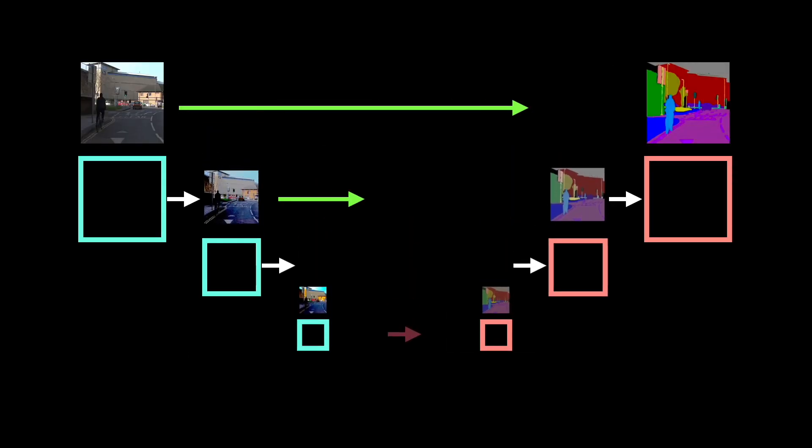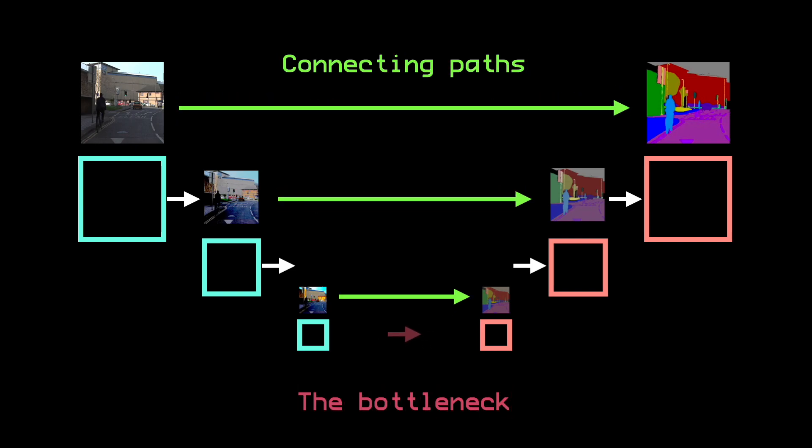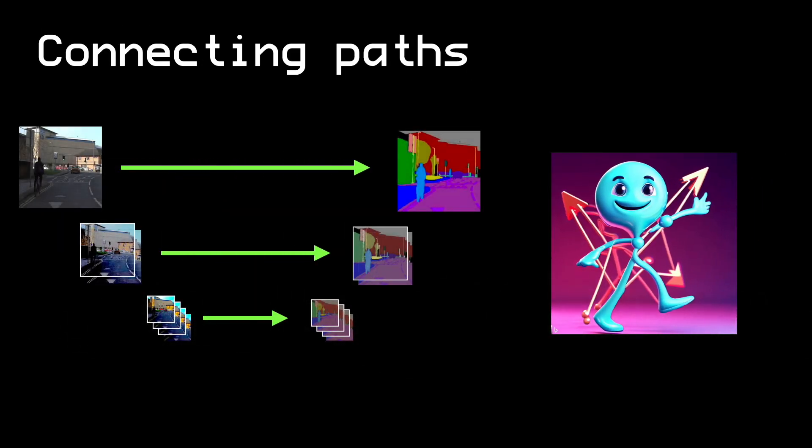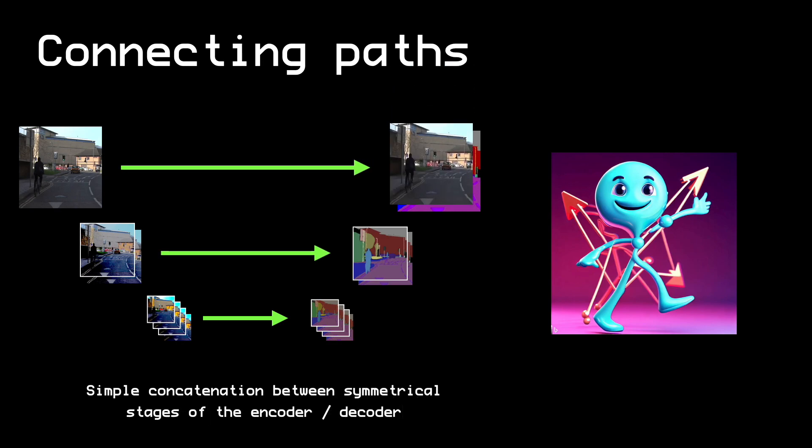There are two types of connections between the encoder and the decoder. These are known as the bottleneck and the connecting paths. First, let's look at the connecting paths. The connecting paths are simple. They simply take a copy of the features from the symmetrical part of the encoder and concatenate them onto their opposing stage in the decoder. This simply means place alongside the decoder's features, meaning subsequent convolutional layers can operate over both the decoder's and the encoder's features.